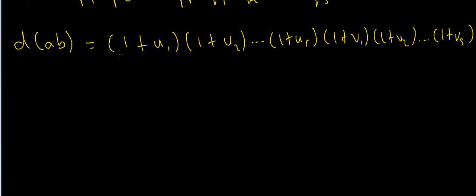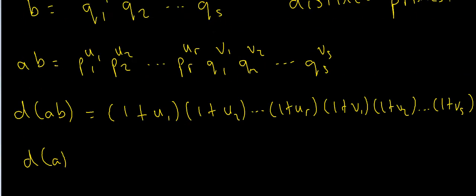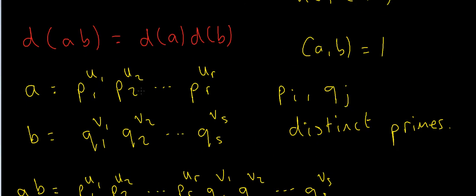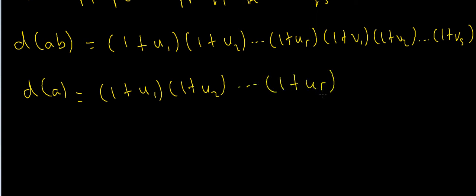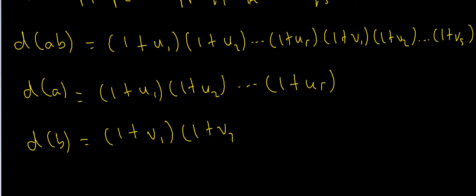Now I want to compare that with d(a) times d(b). Since a has prime factorization p1^u1 * p2^u2 * ... * pr^ur, our formula gives d(a) = (1+u1)(1+u2)...(1+ur). And since b has prime factorization q1^v1 * q2^v2 * ... * qs^vs, our formula gives d(b) = (1+v1)(1+v2)...(1+vs).